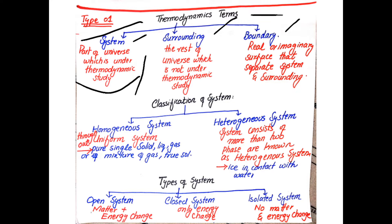Surrounding refers to everything that exists outside the system and is not under observation. The rest of the universe which is not under thermodynamic study is known as the surrounding. The boundary consists of imaginary or real surfaces that separate the system from the surrounding.